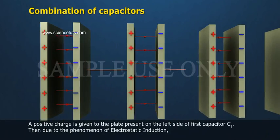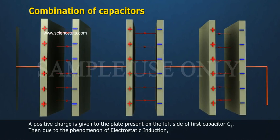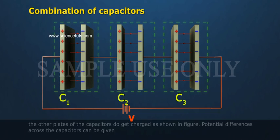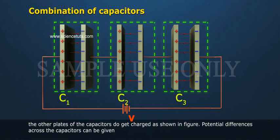A positive charge is given to the plate present on the left side of first capacitor C1. Then, due to the phenomenon of electrostatic induction, the other plates of the capacitors do get charged as shown in figure.